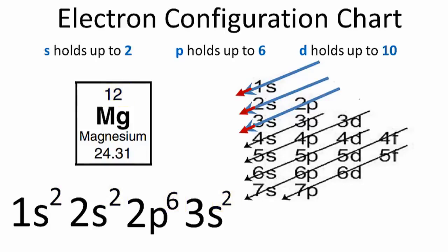1s² 2s² 2p⁶ 3s² is the electron configuration for magnesium. This is Dr. B, and thanks for watching.